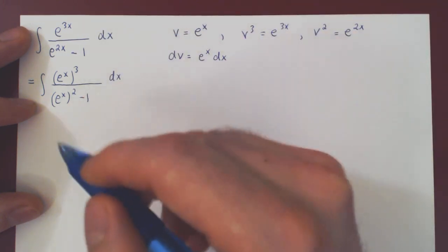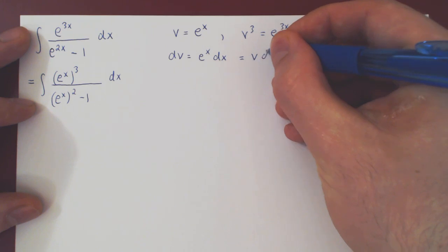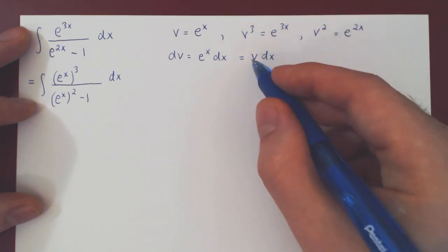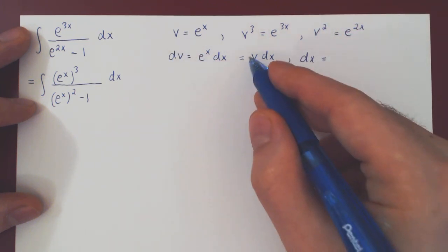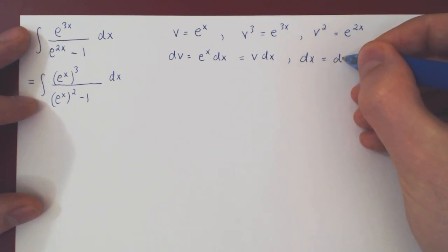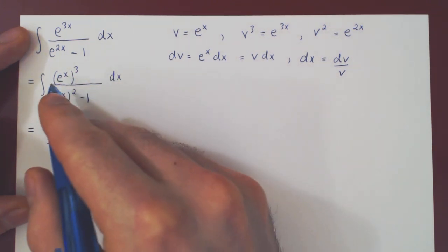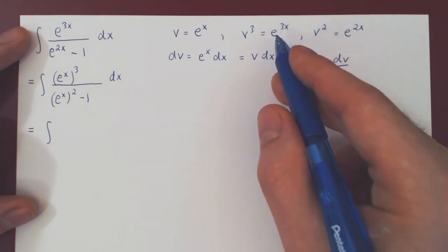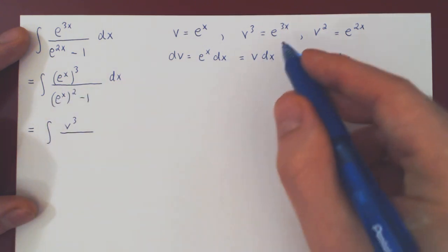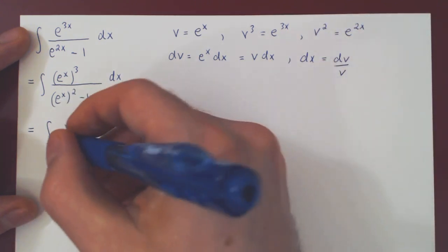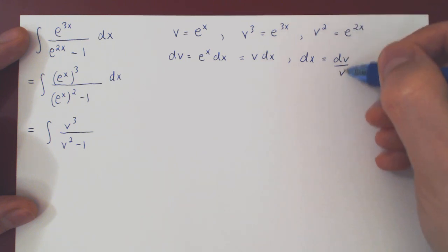We want to find dx in terms of v. But if you look here, e to the x is again v. This is simply v dx. So you can of course solve for dx by dividing across by v. And so dx is quite simply dv over v. And now we can make our substitution. So we have the integral of e to the x cubed, v cubed, over e to the x squared, or e to the 2x, v squared, minus 1 times dx, which is dv over v.